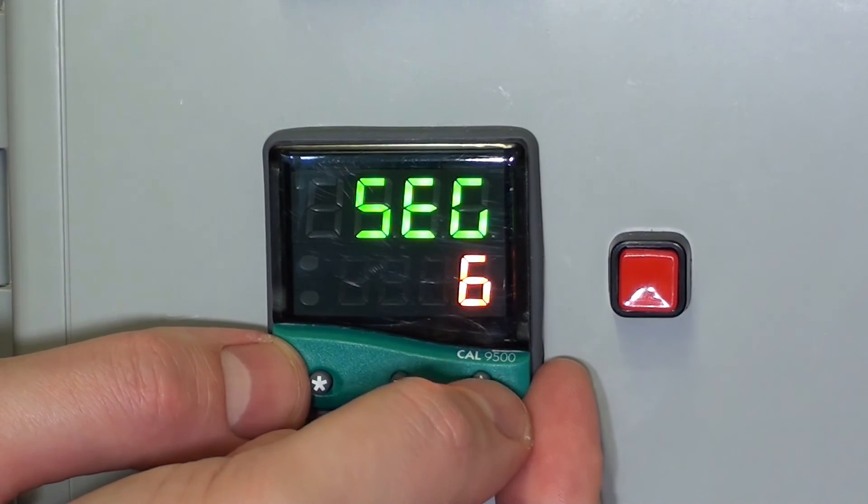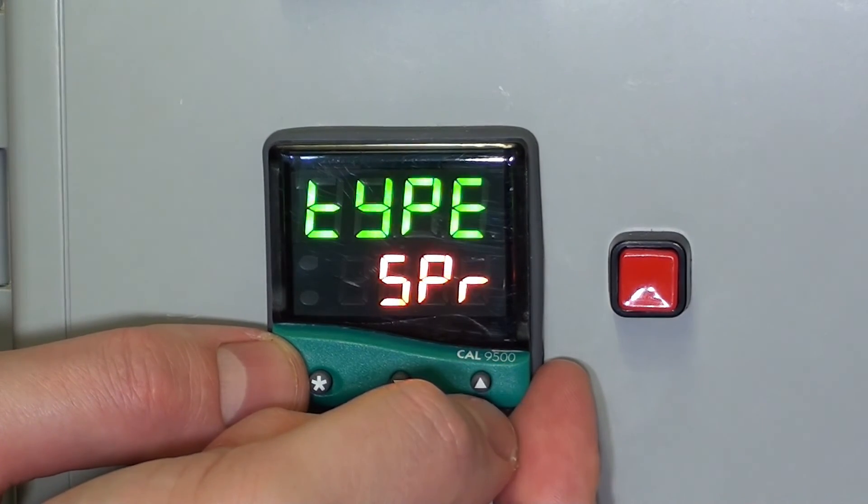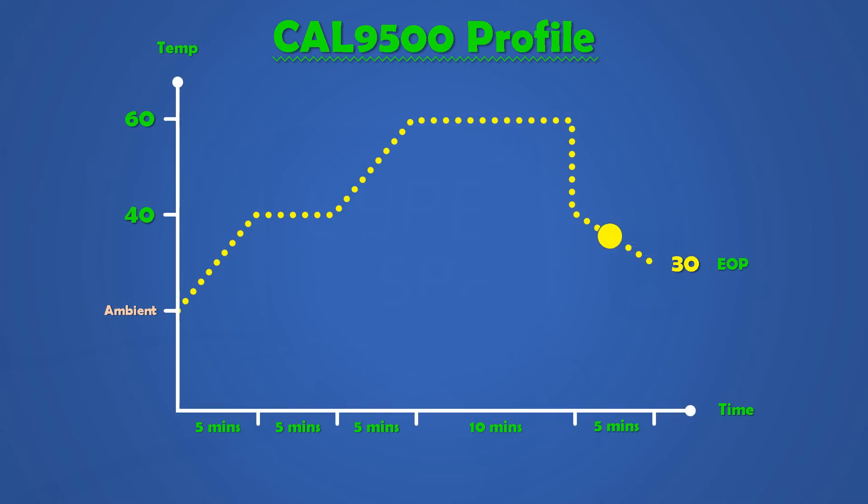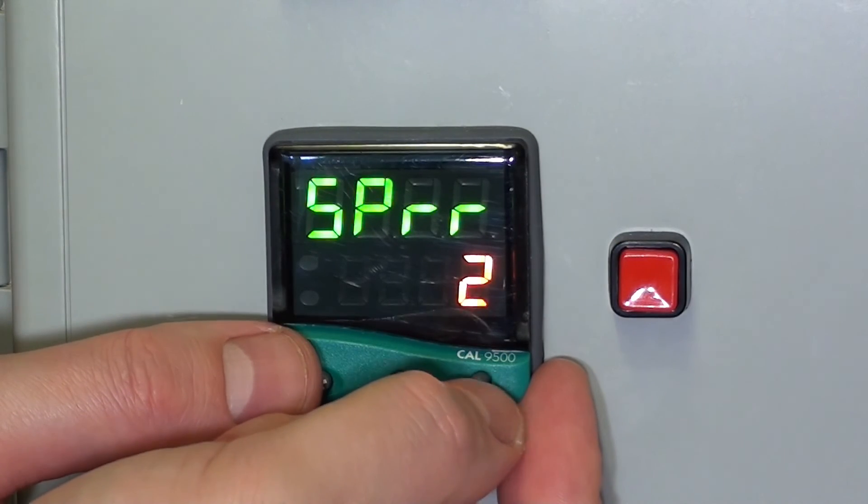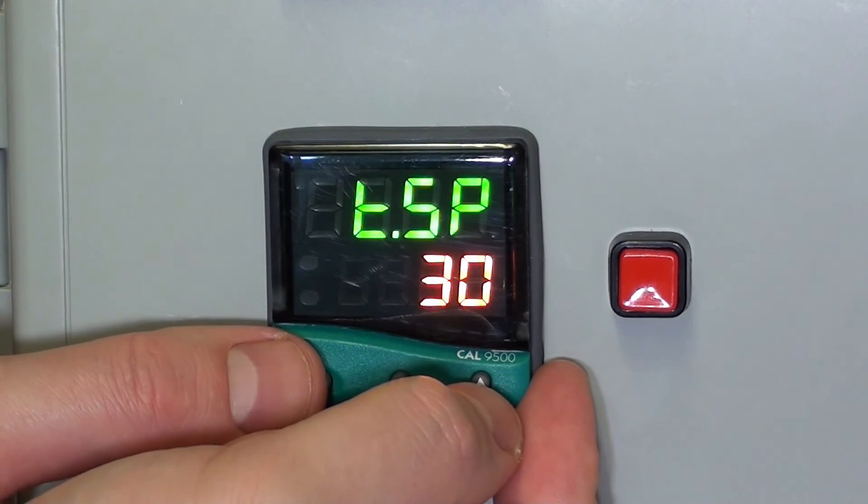Segment 6 is where we want it to ramp down to 30 degrees C. And the ramp rate, 2 this time. Target set point, 30.